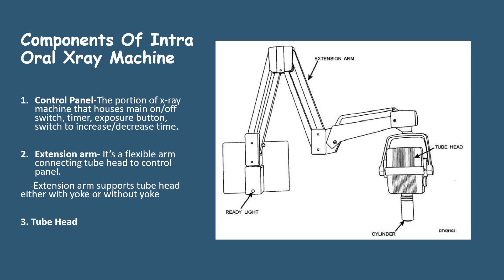The control panel is the portion of the x-ray machine that houses the main on and off switch, timer, exposure button, and a switch to increase or decrease time. This is the control panel.